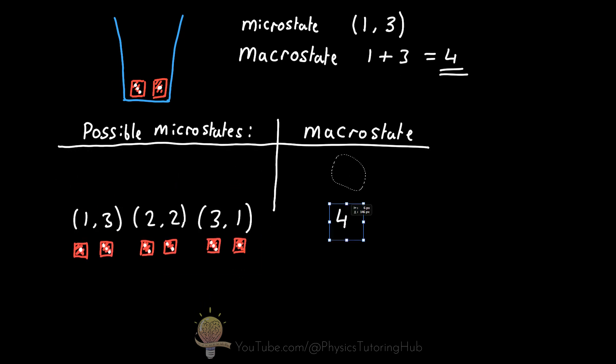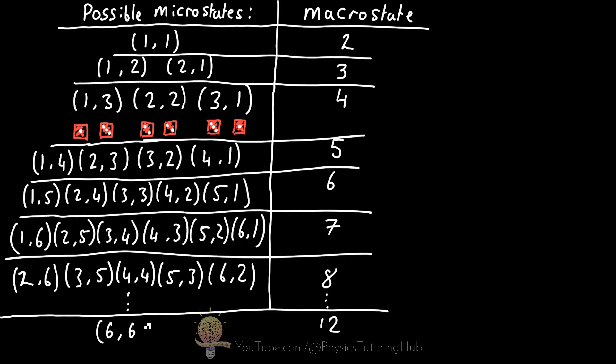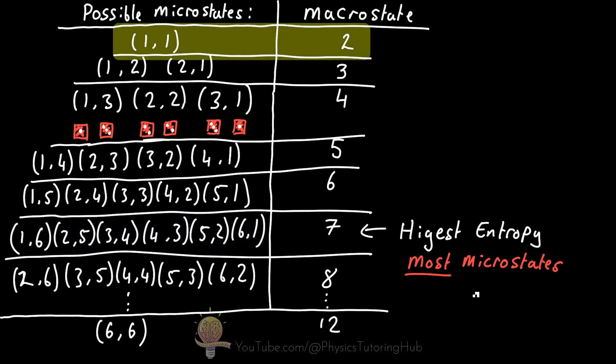If we were to write out every possible microstate for every macrostate for these dice here, we'd find a sum of seven from our dice. So if we were to write out all the microstates here for a macrostate of seven, we can see that we've got six different microstates for the macrostate of seven. The least likely macrostate is either a two or a twelve.